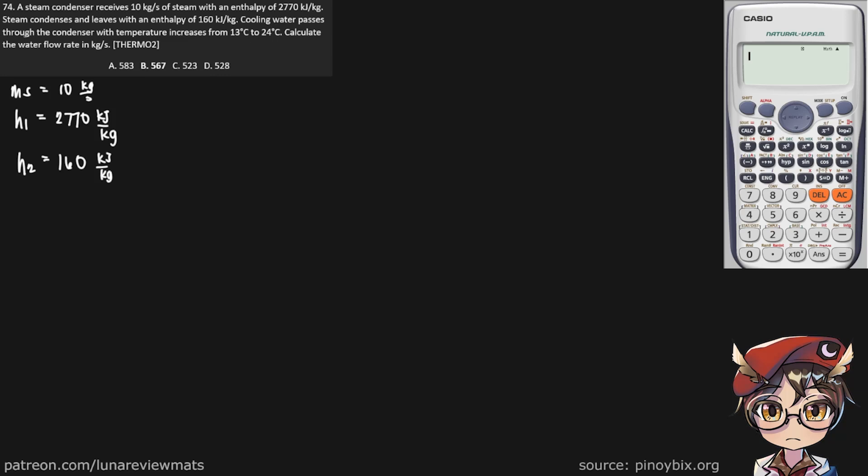Cooling water passes through the condenser with temperature increase from 13°C to 24°C. So let's call that delta T, which is simply 24 minus 13, and that is equal to 11 degrees C or 11 Kelvin.